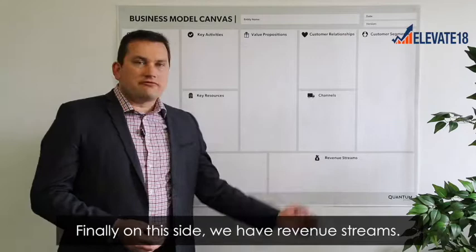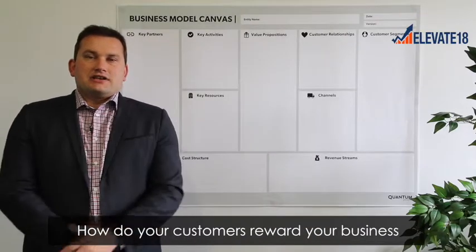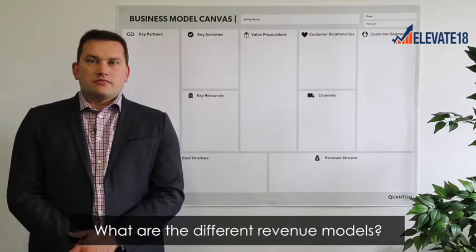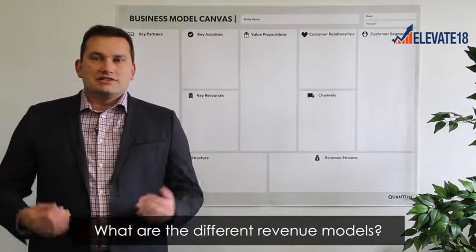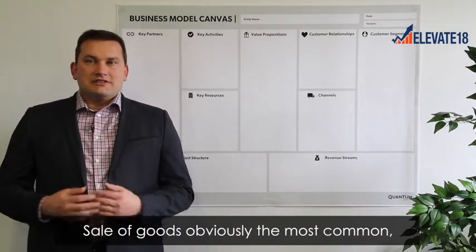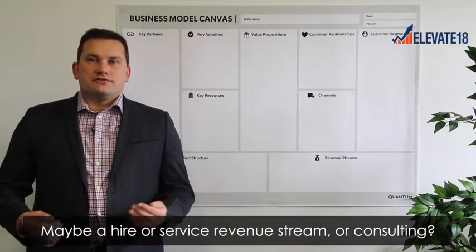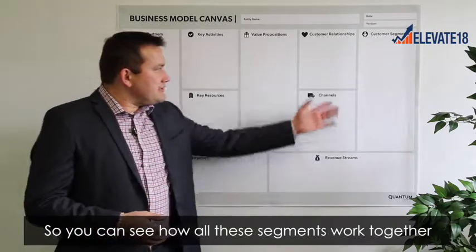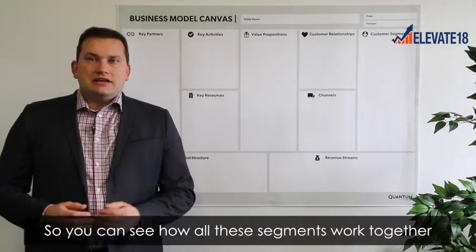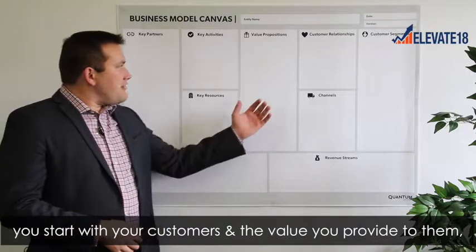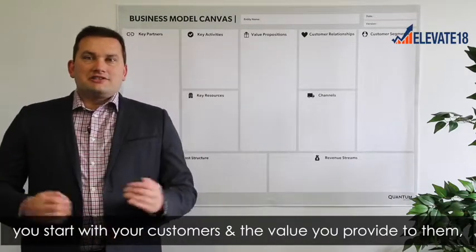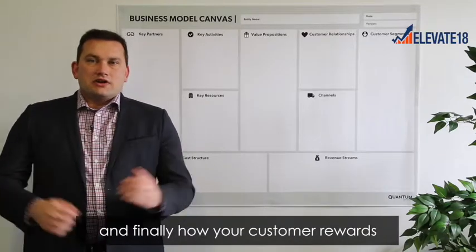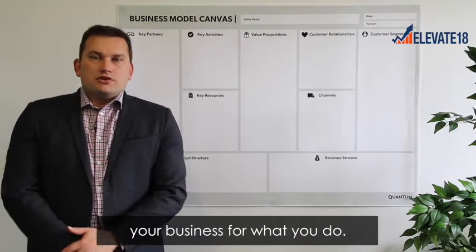Finally on this side we have revenue streams. How do your customers reward your business for the value you provide to them? What are the different revenue models? Sale of goods is obviously the most common, but are there others — maybe a hire or a service revenue stream, or consulting perhaps? You can see how all these segments work together: you start with your customers and the value you provide, the relationships you need, the channels to service them, and finally how your customer rewards your business for what you do.